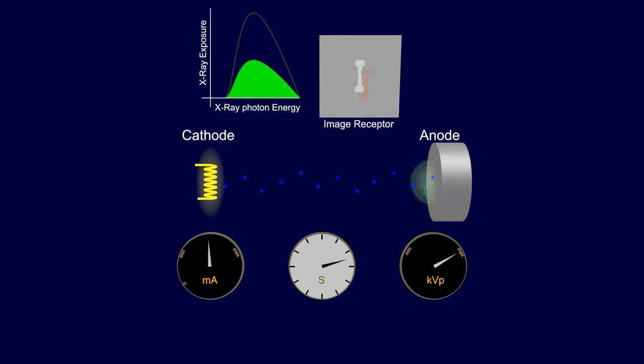A moderate MA produces more electrons, which means less time is needed to reach the set exposure.